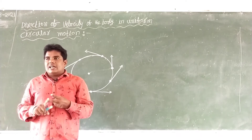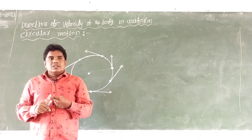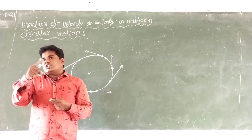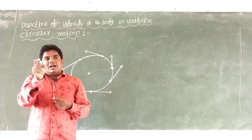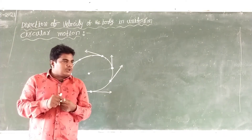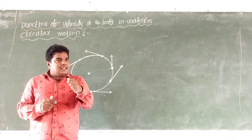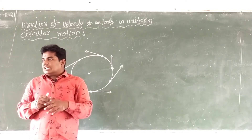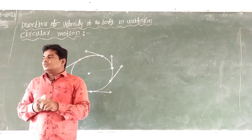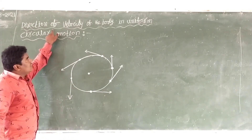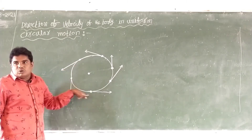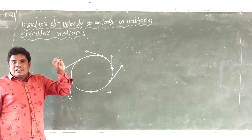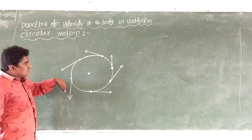Is there speed or velocity? There is speed. Why is there speed? The velocity continuously changes. The direction continuously changes. If the direction continuously changes, there is velocity. What is there? There is speed.